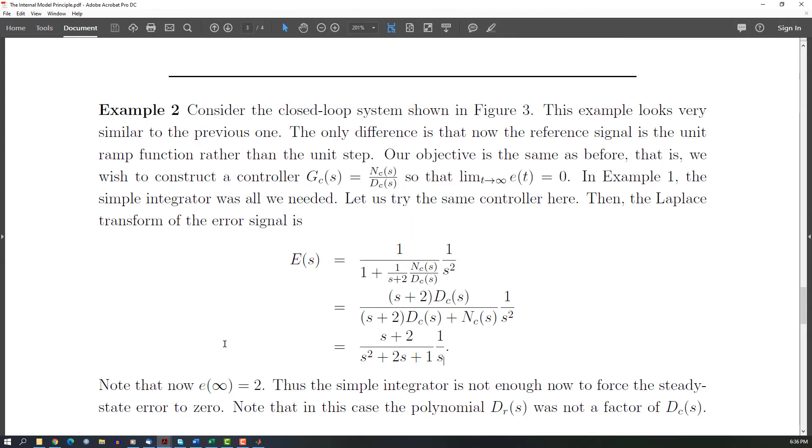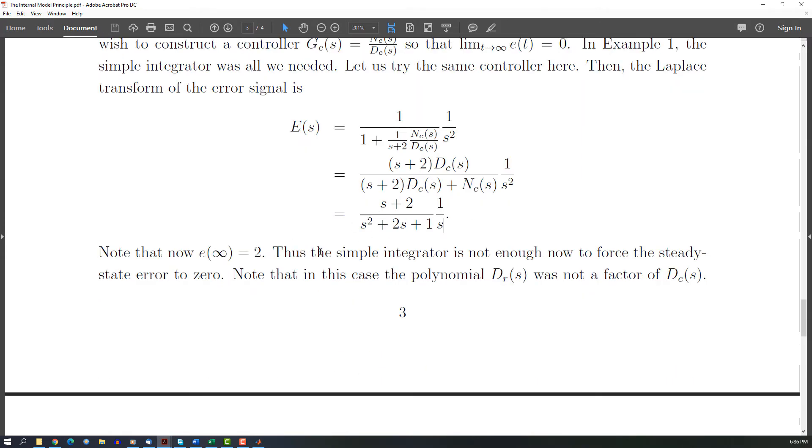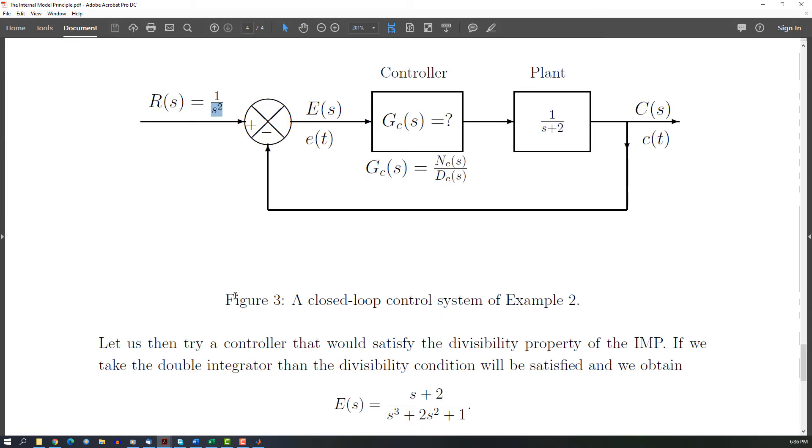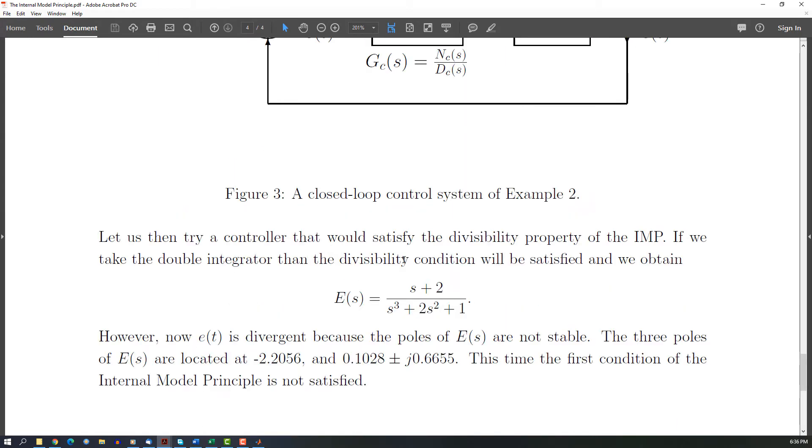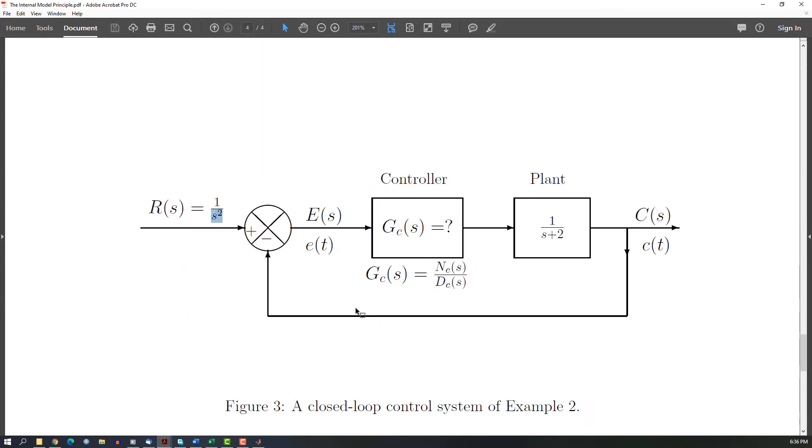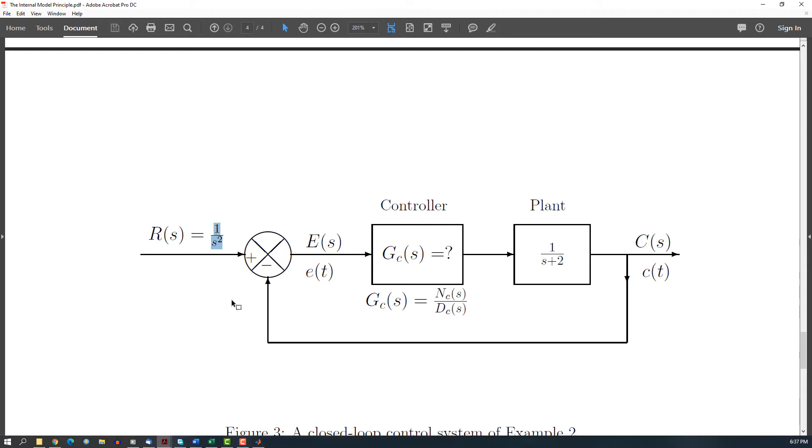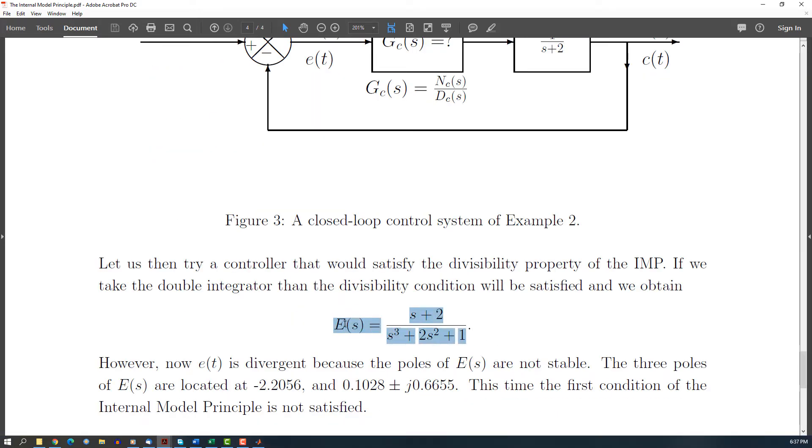As I said, we have to have the controller contain all the poles here. So again, we try the controller equal to this, so in the end you have this one. Now the second condition is satisfied, but the first one is not satisfied because here you have the poles on the right.